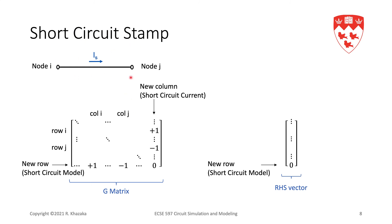For a short circuit between node I and node J, we think of it as a voltage source with zero value. We add a new column for the current IS: +1 at row I for KCL at node I, and -1 at row J for KCL at node J. We add a new row for the short circuit model: VI - VJ = 0, so +1, -1 on the left and zero on the right-hand side. That is the short circuit stamp — the same as a voltage source stamp with zero voltage — and the key advantage is that IS is now one of our variables.